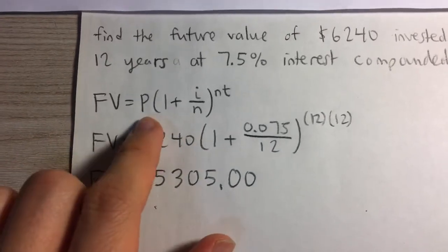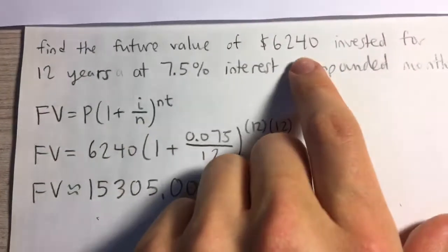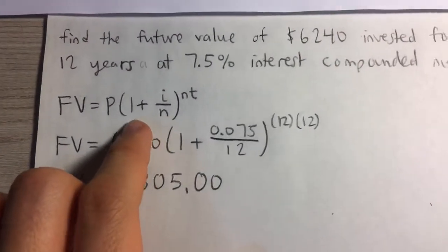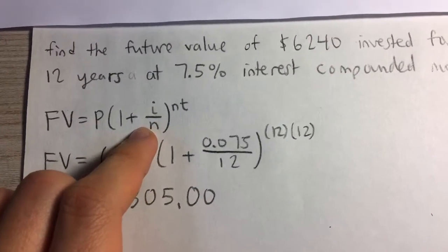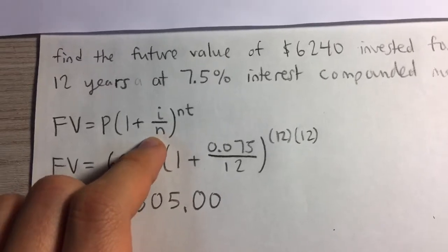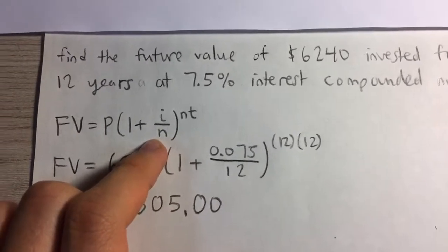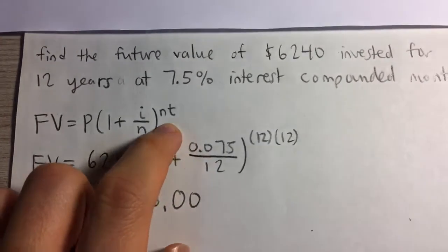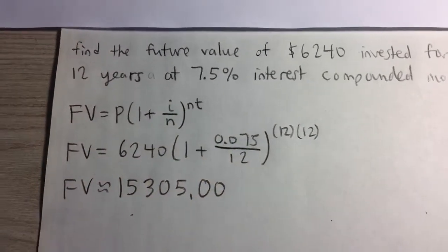The future value is equal to the principal, that's the amount of money you invested originally, times 1 plus i, which is the interest rate, over n, which is the number of compounding periods per year, all raised to the nt power, where t is the time in years.